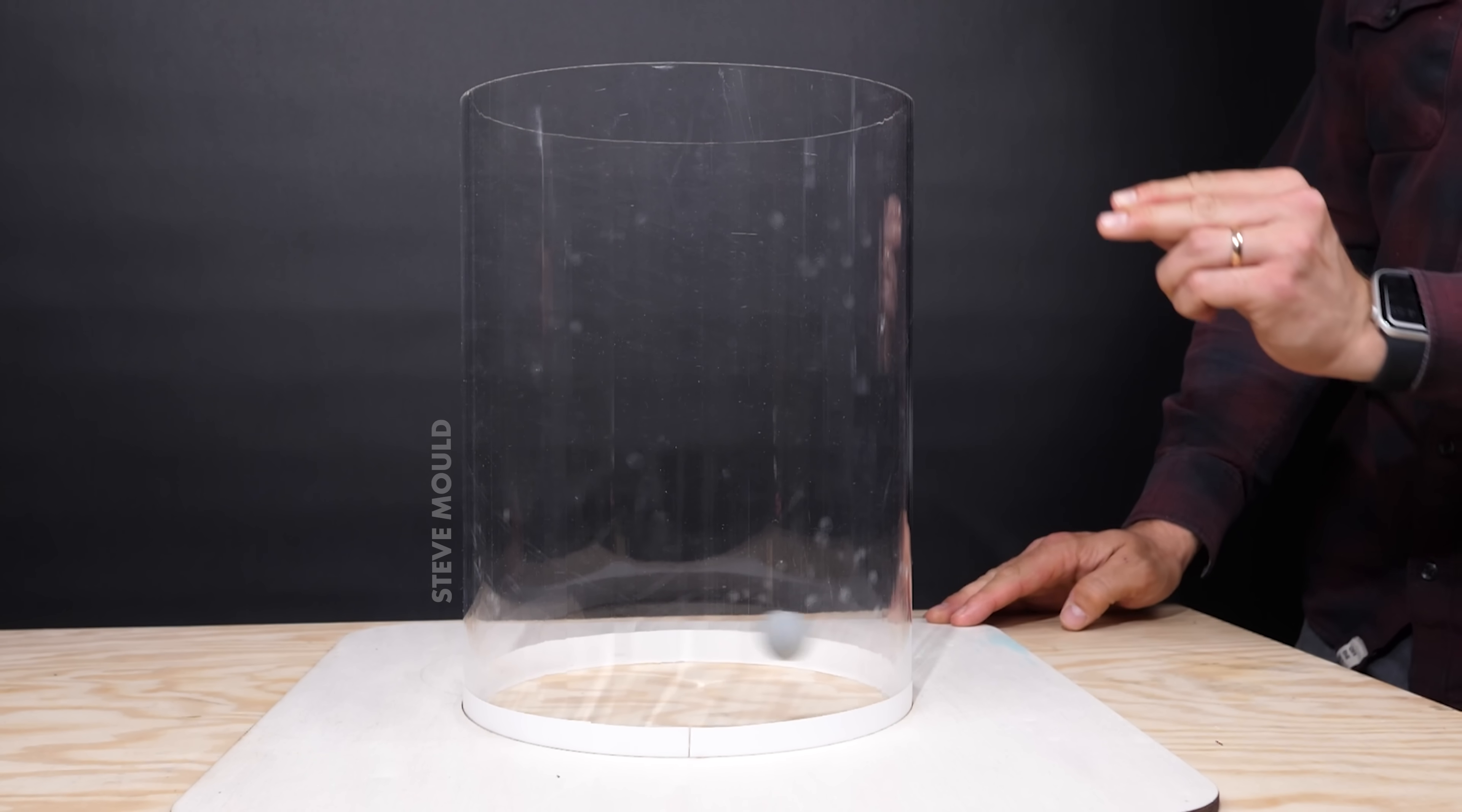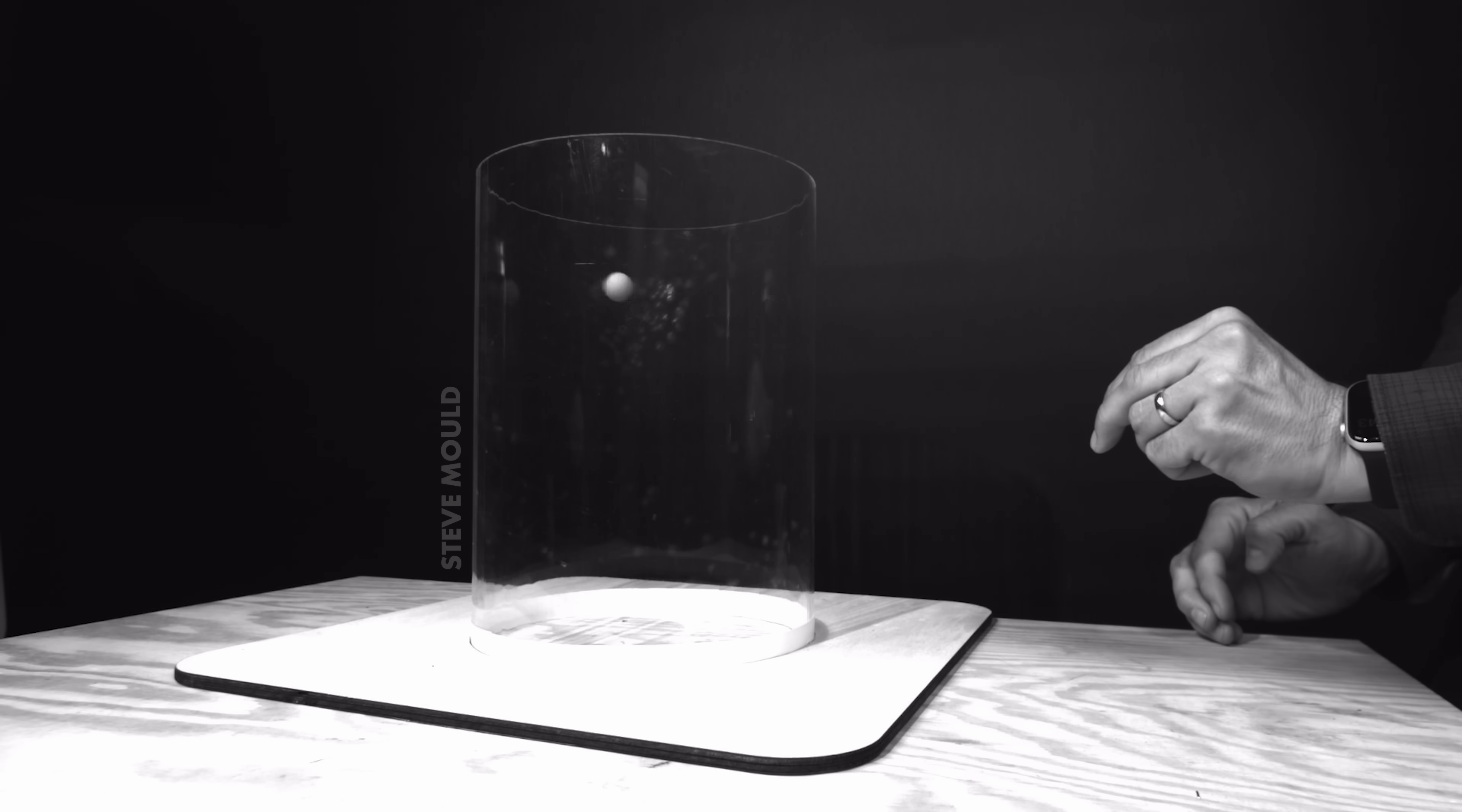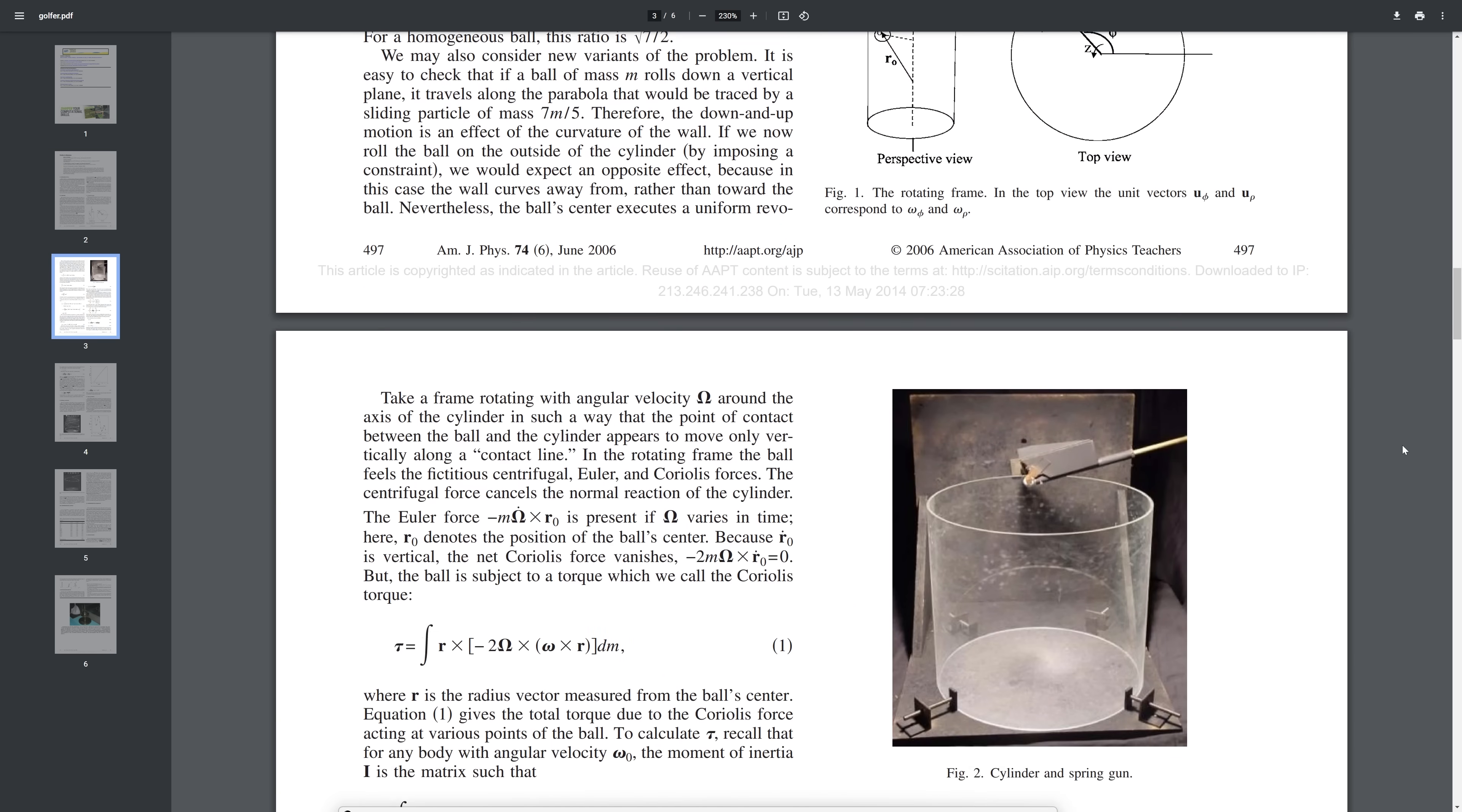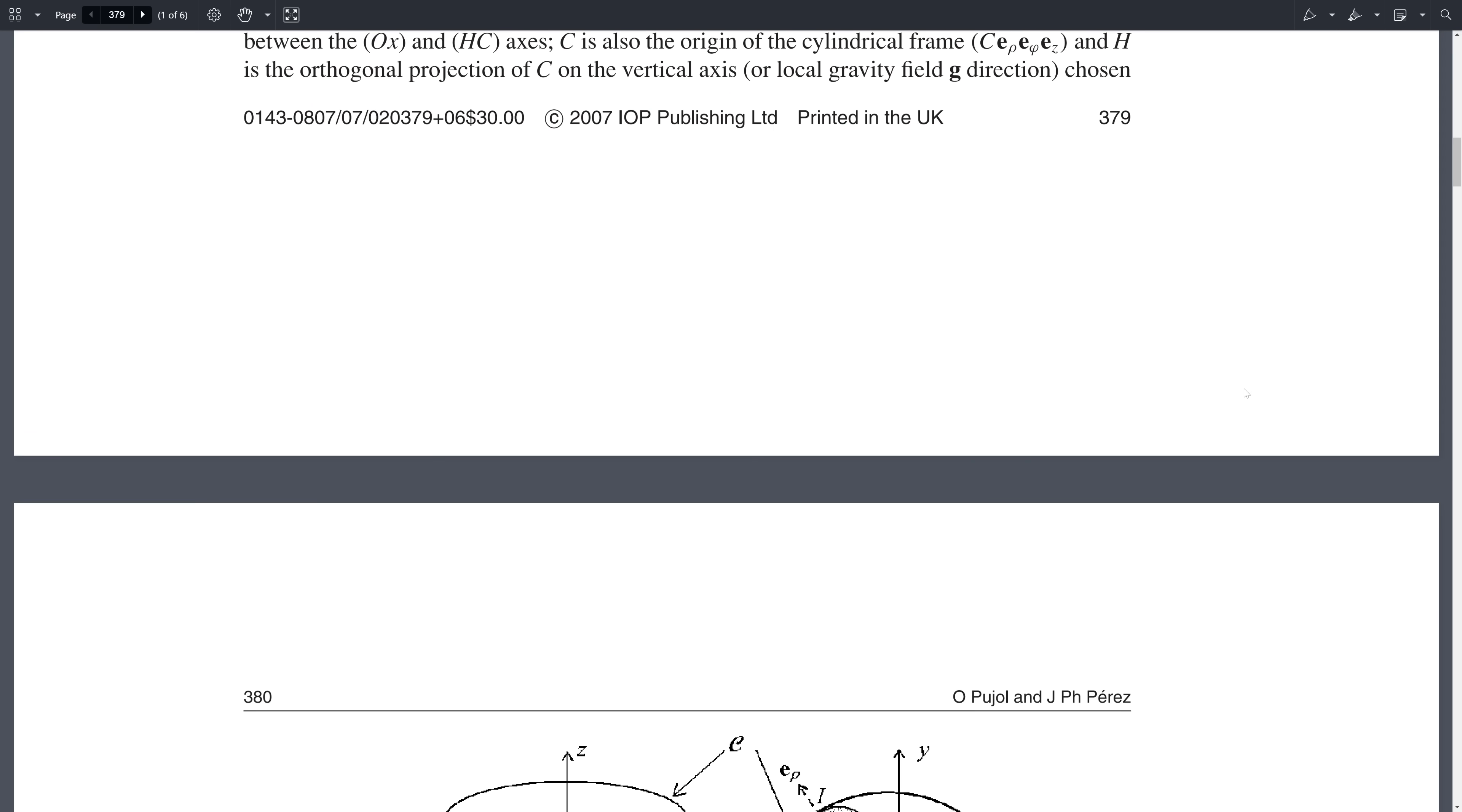So the effect must come from the fact that it's rotating around something because the effect goes away in the flat equivalent of this. I found a couple of papers that go through the maths. One analyzes the equations of motion from a rotating reference frame, the other from an inertial reference frame. And they both conclude that, yes, this is what we should expect to happen.